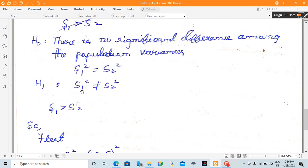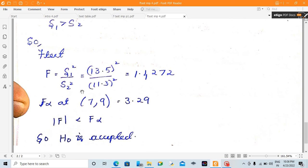While applying F test, since S1 squared is greater than S2 squared, F equals S1 squared divided by S2 squared. We get the answer as 1.4272. F alpha at 7, 9 at 5% level.